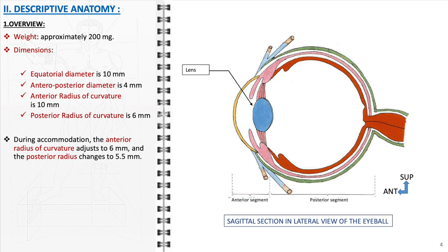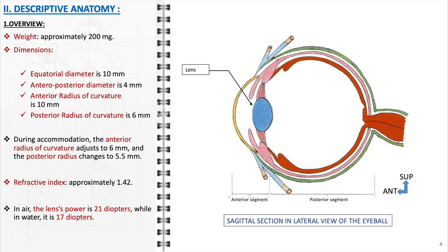During accommodation, the anterior radius of curvature adjusts to 6 millimeters, and the posterior radius changes to 5.5 millimeters. This flexibility allows the eye to focus on objects at varying distances. The lens has a refractive index of approximately 1.42, which is indicative of its ability to bend light effectively for proper vision. In air, the lens's power is 21 diopters, while in water, it is 17 diopters. This difference illustrates the influence of the surrounding medium on the lens's refractive power.